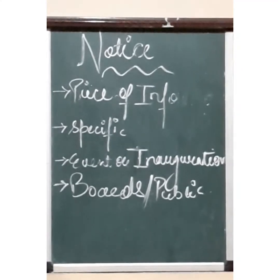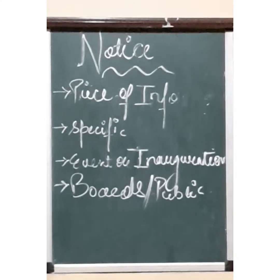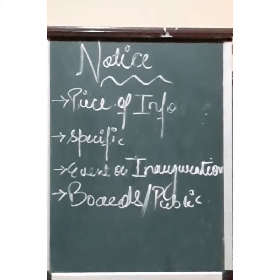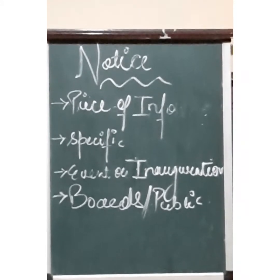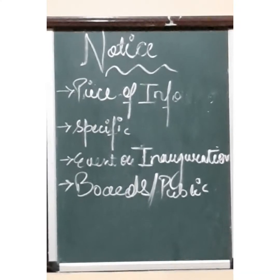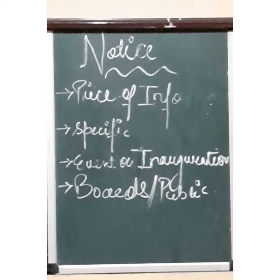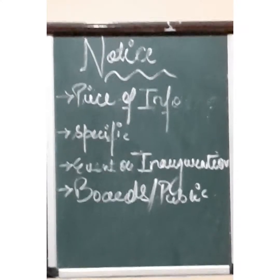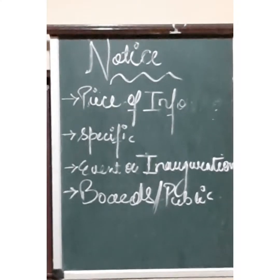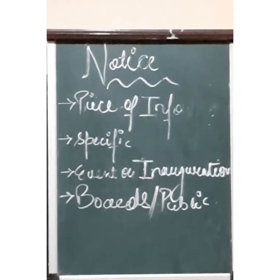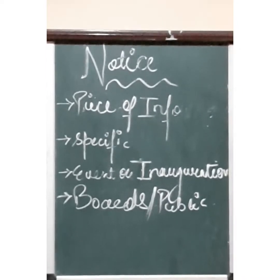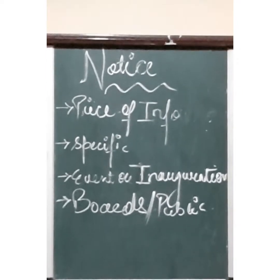Now there are some key points which are always to be kept in mind while writing a notice. The ideal length of a notice is 50 words, so only relevant points need to be addressed. Present the notice in proper format. Try to write the notice in indirect speech or passive voice only. Don't use personal pronouns like I and we. These four points must be kept in mind while writing any notice.